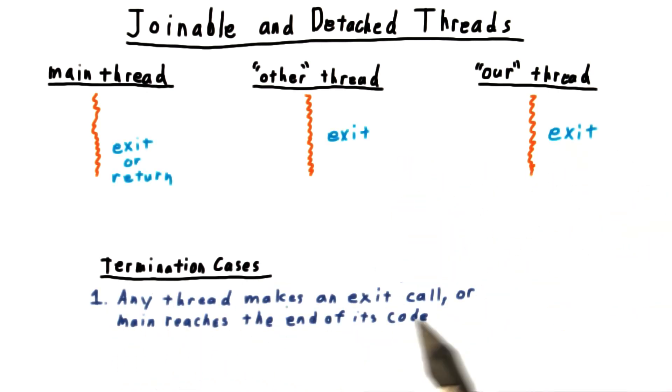First, the entire process will terminate if any thread makes a call to exit or if main reaches the end of its code, or executes a return statement. Again, this will kill all threads associated with the process.